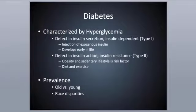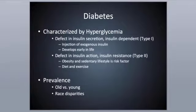In Type 1 diabetes, there's a defect in insulin secretion, and individuals who have this disorder are going to be insulin dependent. They'll require some type of external means of getting insulin into their body, usually through an injection. Type 1 typically develops early in life, so younger individuals are more commonly diagnosed with it.